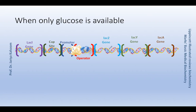In this case, the lac operon is turned off or repressed. Repression of the lac operon occurs through binding of the repressor protein to the operator. This repressor protein has a helix-turn-helix motif structure. It attaches to the operator, which is located downstream of the promoter sequence. This binding interferes with binding of RNA polymerase to the promoter region. This is an example of negative regulation.